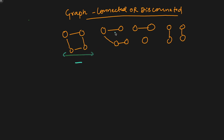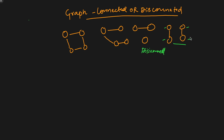Here all the vertices are connected, and here this one is not connected — it is disconnected. In another example, these two vertices are connected and these two vertices are connected, but these two groups are not connected to each other.